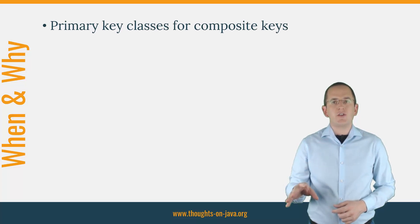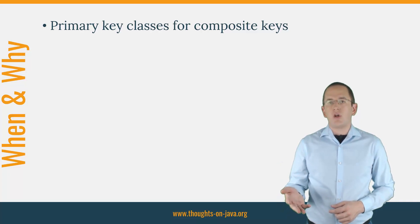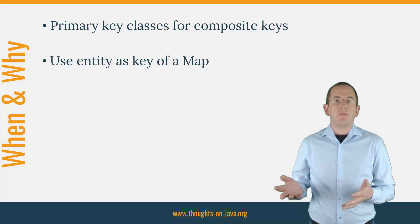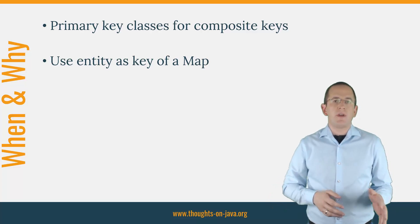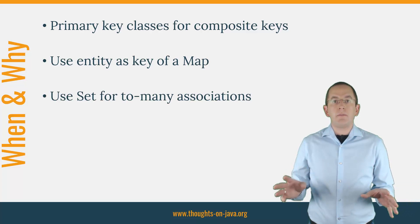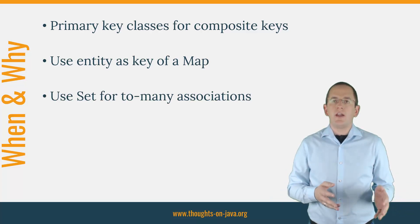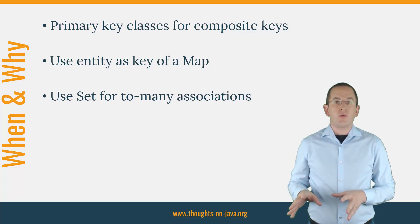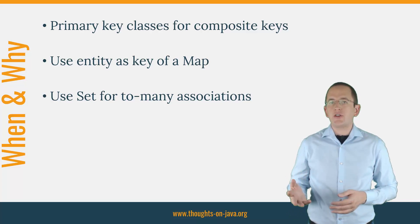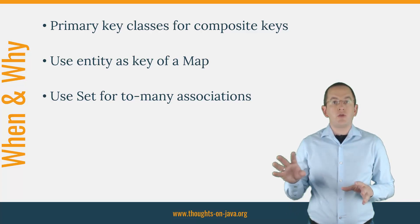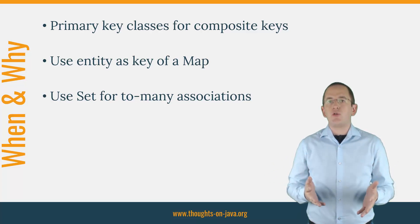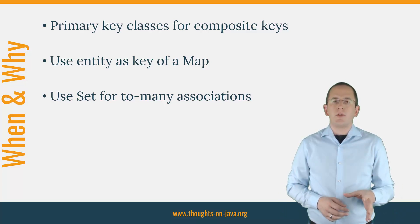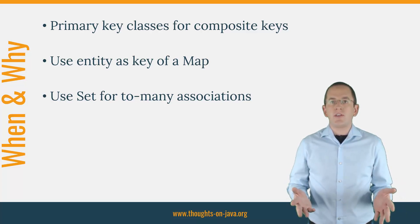You need to implement the equals and hashcode methods for primary key classes if you map composite primary keys. If you map an association to a map, your map key needs to implement the equals and hashcode methods — so if you use an entity as the key, it needs to provide both methods. You can map one-to-many and many-to-many associations to different subtypes of a collection; if you use a set, your entities have to have equals and hashcode methods. Unfortunately, only the first reference provides a clear indication that you need to implement these methods for primary key classes — otherwise, two different instances of your primary key object with the same attribute values would be equal in the database but not in your Java code.